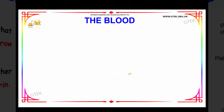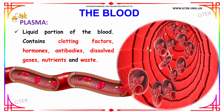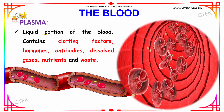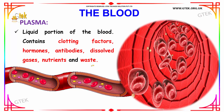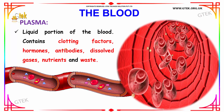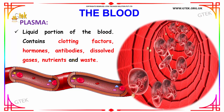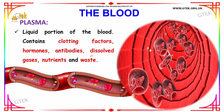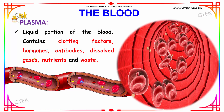Next we have plasma. Plasma is the liquid portion of the blood and it contains clotting factors, hormones, antibodies, dissolved gases, nutrients, and waste. Plasma helps in the transportation of nutrients and dissolved gases to various parts of the body.